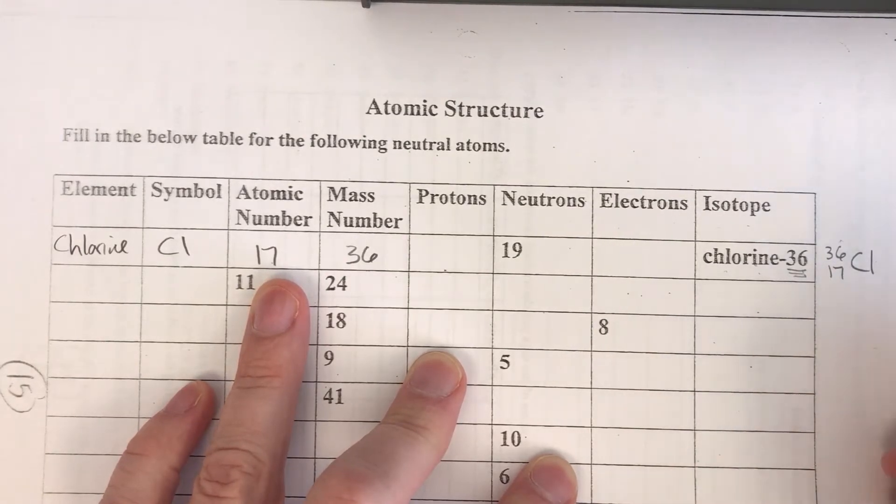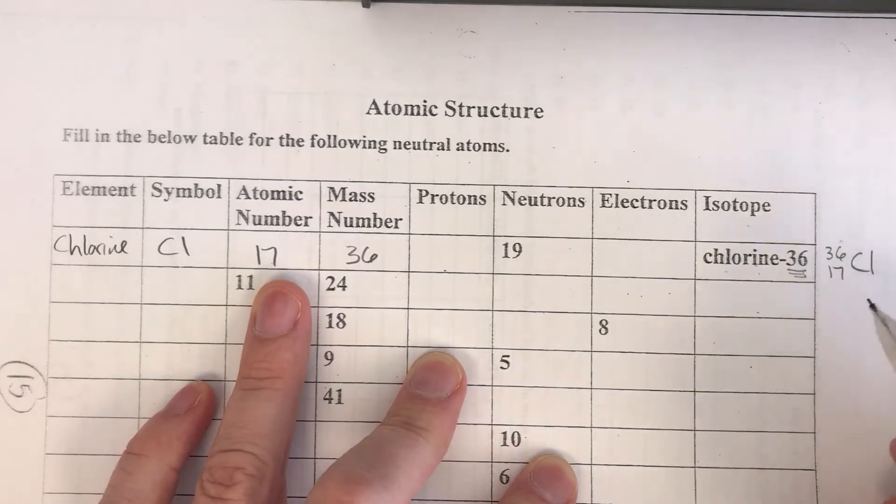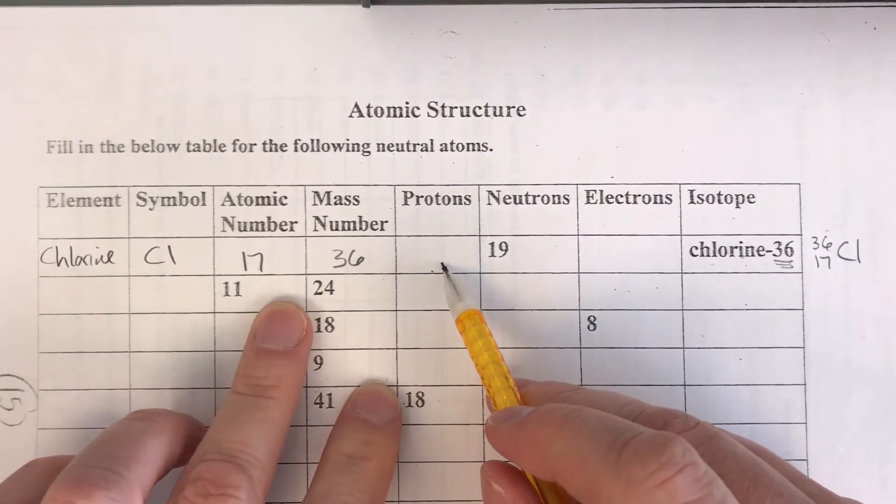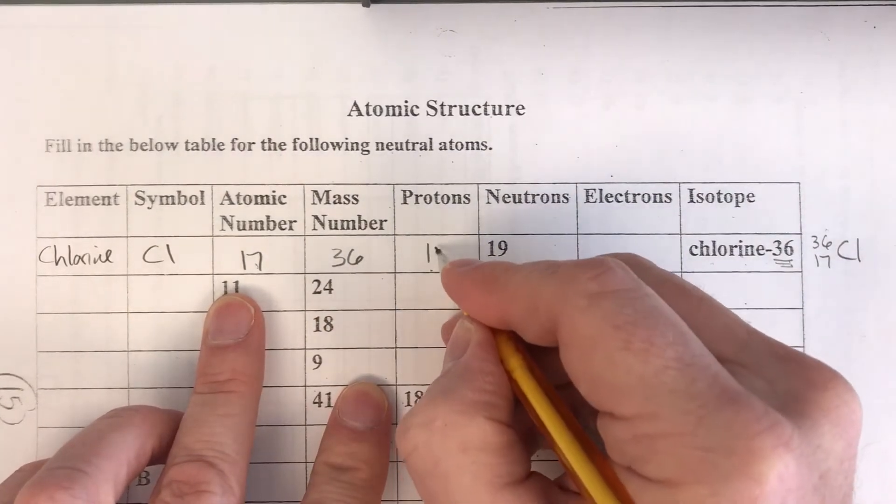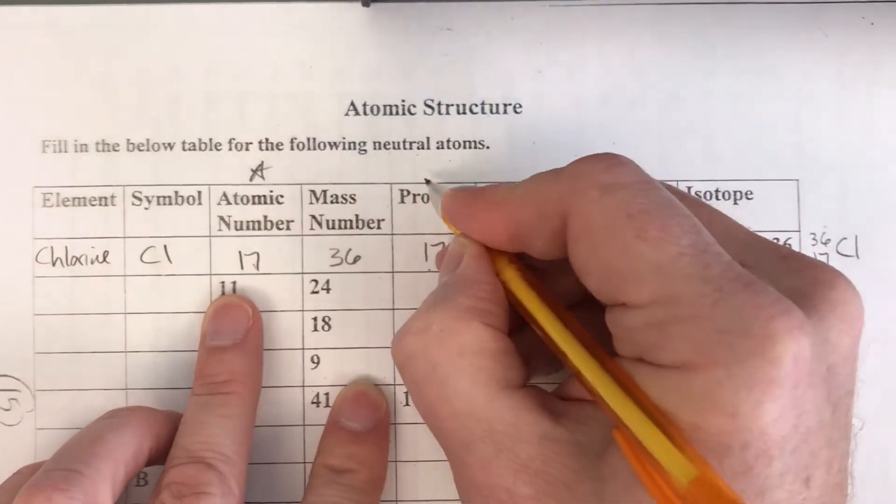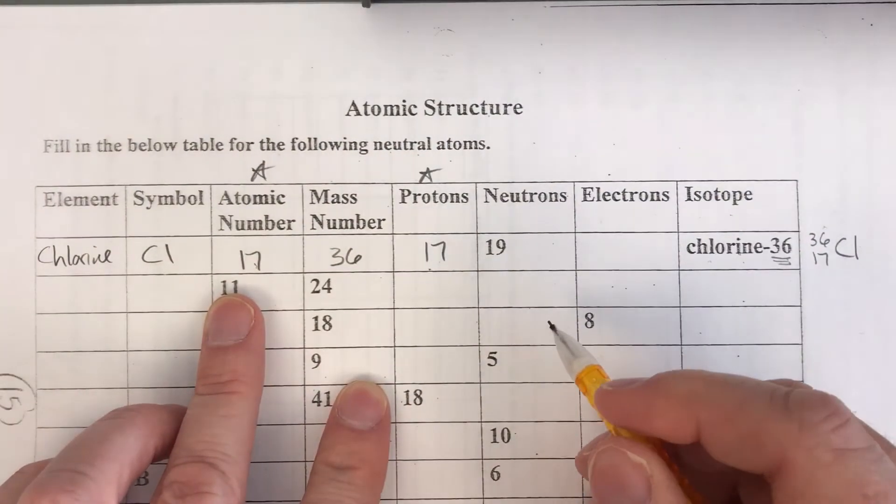So 36 over 17 CL. That's called nuclear notation. Just a little bit different way to write it. Now the number of protons we know is always the same as the atomic number. The atomic number is based on the number of protons. So these two columns are always going to be the same.